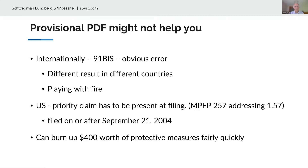Regarding the provisional approach internationally — you can correct an obvious error, but a formula rendered as boxes instead of variables probably doesn't qualify as an obvious error. You can't incorporate by reference internationally in many countries. You can burn up $400 or $200 worth of protective measures fairly quickly. In our firm, we're going to start live testing very carefully — picking applications without formulas, ideally under 20 pages, filed early in the morning. We'll get a PAIR copy back the same day, have it proofed thoroughly, and if there are problems, file a PDF and not pay the fee in the original case.